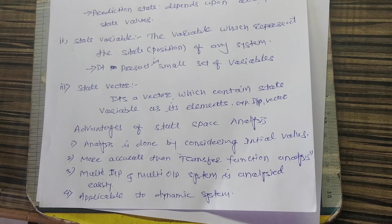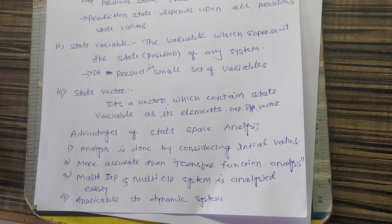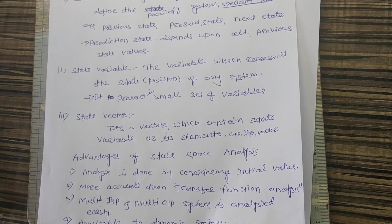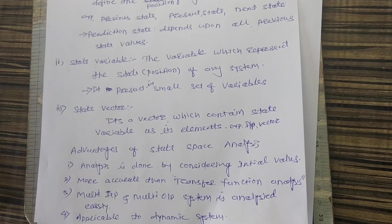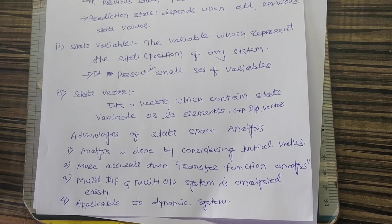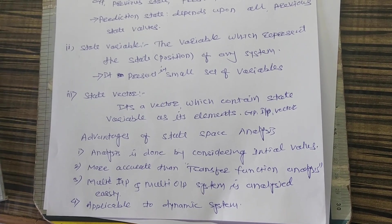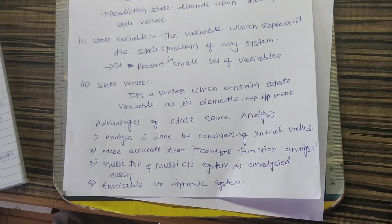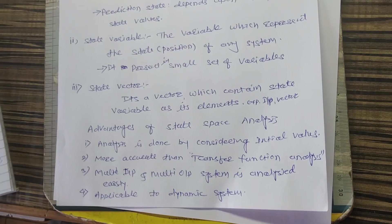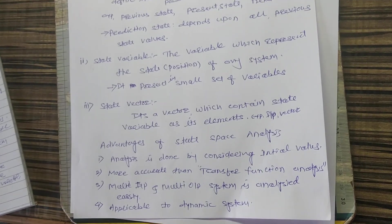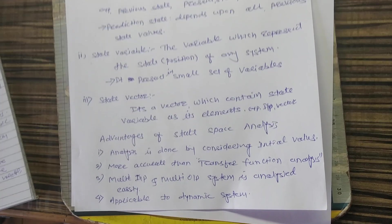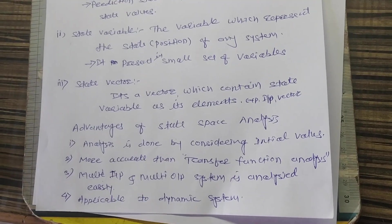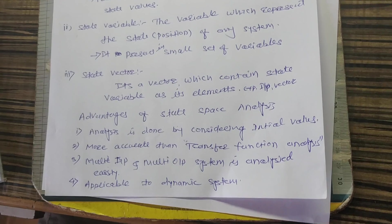The second advantage is that state space analysis is more accurate than transfer function analysis. In transfer function analysis, we take the Laplace transform of the input and output and find their ratio to get the transfer function, then find poles and zeros to define stability. This is possible when inputs and variables are limited to one or two. But when the number of state variables is more than one, it is very difficult to apply the transfer function and find poles and zeros. In that case, we use state space analysis.